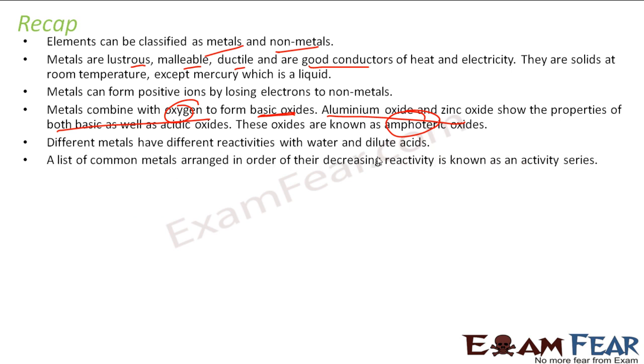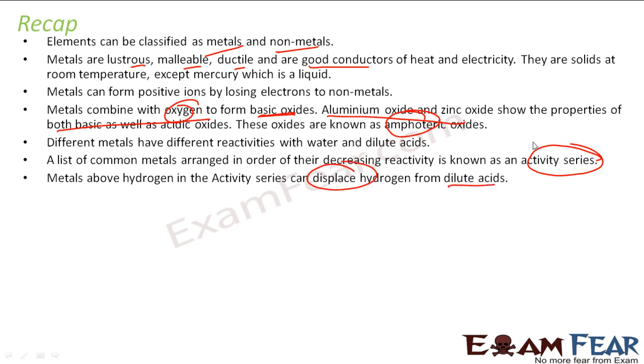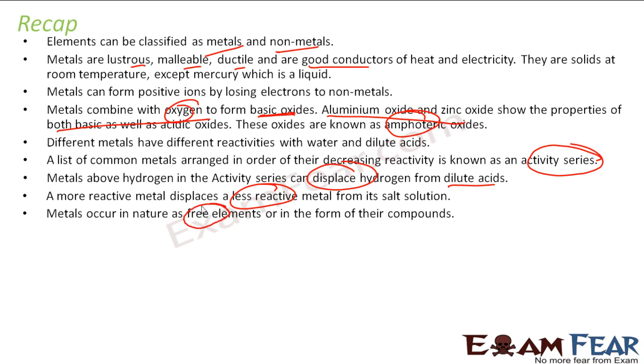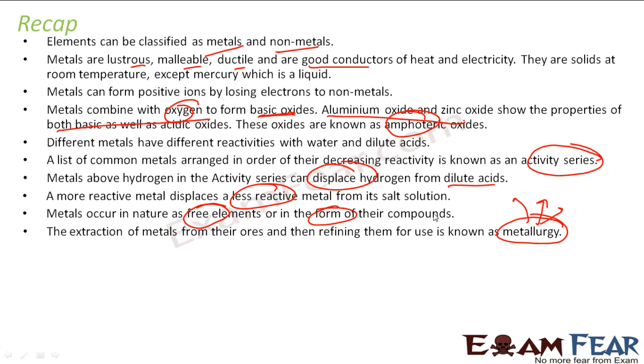And then different metals react with water and acid in a different form. And that is because of the different reactivities they have. And the list of common metals can be arranged in their order of reactivity, that is known as activity series. We have done that using experiments. Metals above hydrogen in the activity series can displace hydrogen from dilute acid. So in the activity series we have hydrogen also. So metals above hydrogen can displace hydrogen from the acid. More reactive metal will displace a less reactive metal from the salt solution. Metal occurs as a free element or in the form of compound also in the nature. The extraction of the metal from the ore and the refining, the whole thing is called metallurgy. It is a very old process. People have been doing this since long.